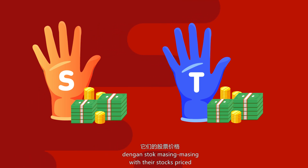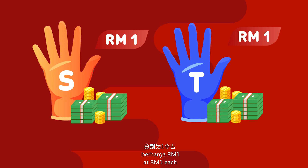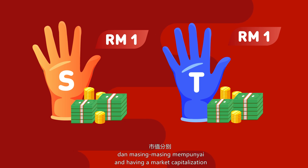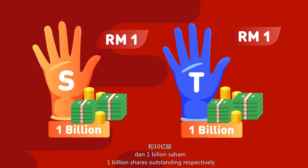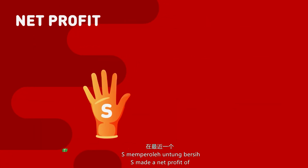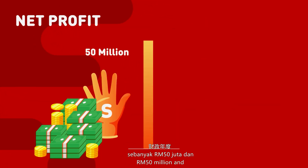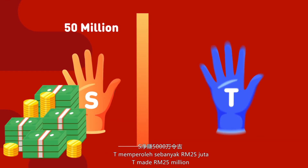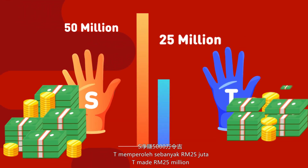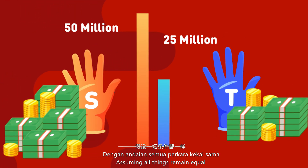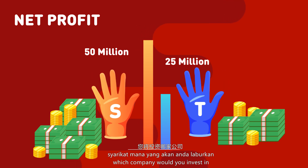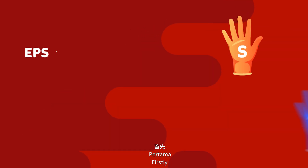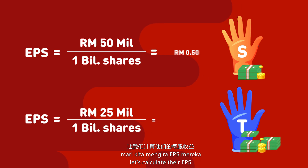Let's explore further. Imagine S and T are major rubber glove producers in Malaysia, with their stocks priced at RM1 each and having a market capitalization of RM1 billion and 1 billion shares outstanding respectively. S made a net profit of RM50 million and T made RM25 million in their latest financial years. Assuming all things remain equal, which company would you invest in? First, let's calculate their EPS.